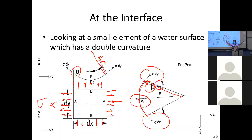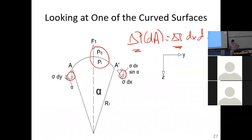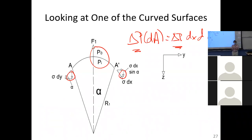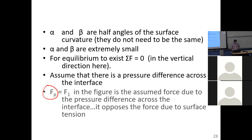The surface tension in the x and y directions — sigma dx and sigma dy — have components in both x and z, or y and z directions. Since this surface is static and not moving, the sum of forces in any direction equals zero. We're going to use the z direction. The sum of the z components of the x and y component forces would be offset by the difference in pressure across the interface. We assumed pressure in the fluid at the interface of pi, and above it we have atmospheric pressure. That difference in pressure times the area of the coupon — dx dy — is a pressure force offset by the surface tension forces. Anything in red is what we were doing last time.